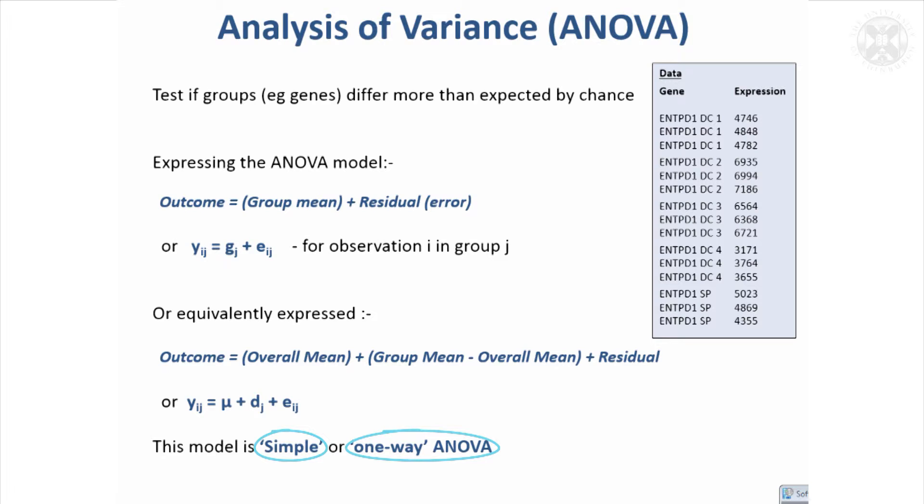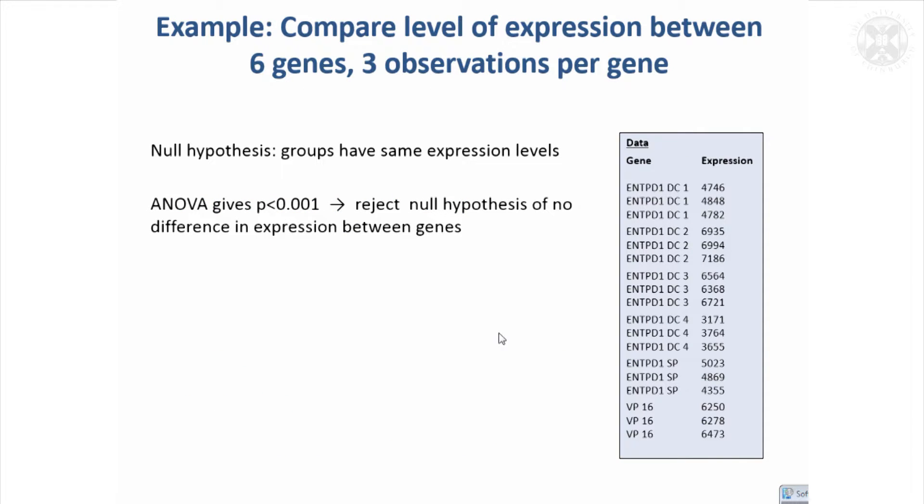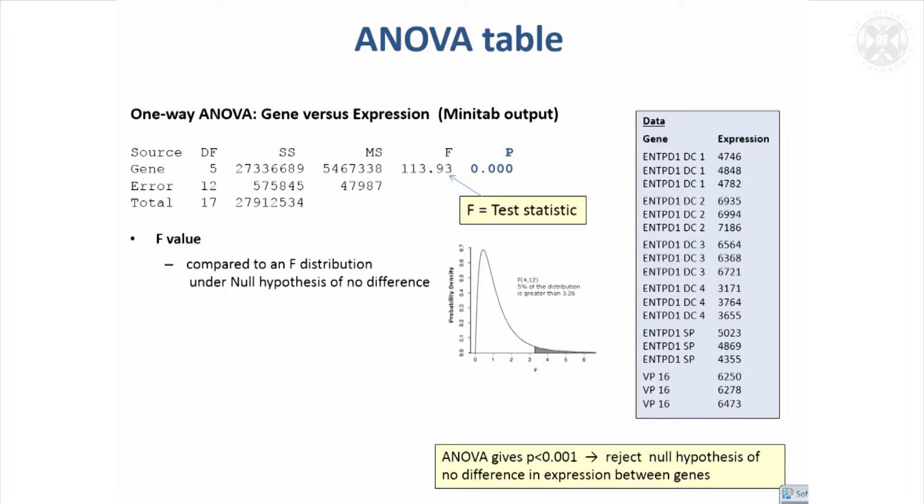This is a simple version of analysis of variance, sometimes called one-way analysis of variance because we're only comparing between one set of groups. We'll look next time at what happens if we've got the data grouped in more than one way—two-way or even three-way ANOVA. If we look at this gene expression data again, our null hypothesis would be that the groups all have the same expression levels. If we do an analysis of variance on that, it turns out we get a p-value of less than 0.001, which is still highly significant. So we can reject that hypothesis that there's no difference in expression between the genes.